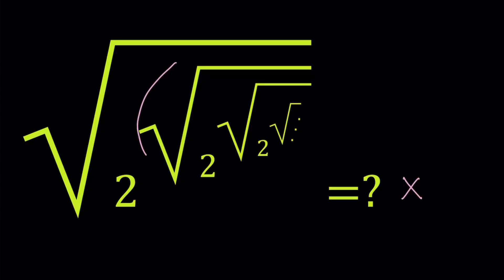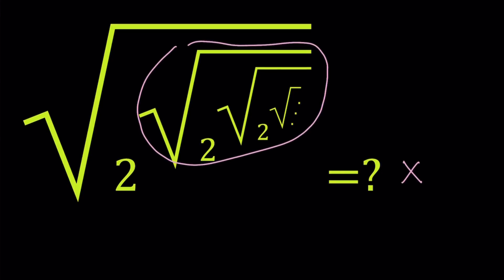Take a look at this expression. Isn't that the same thing as the original? Square root of 2 to the power, square root of 2 to the power, and so on — same thing. So we get a nice equation. From an infinite expression, we get a finite equation without the dot-dot-dot. After the substitution, it looks like: square root of 2, which is our base, to the power x equals x.